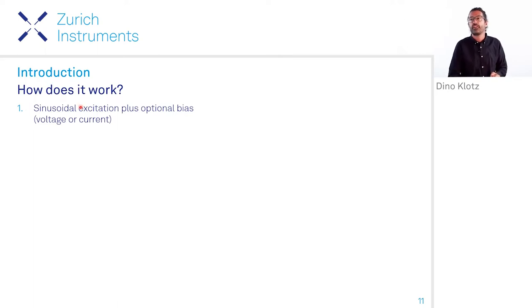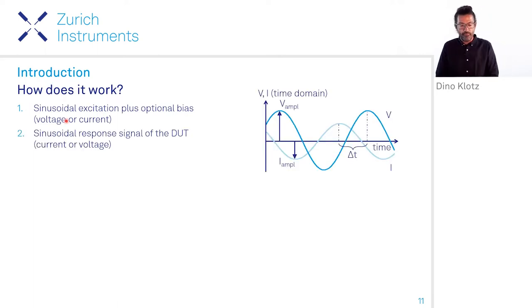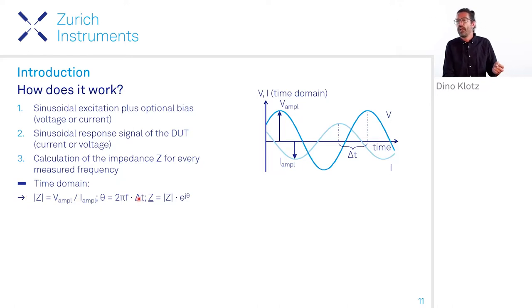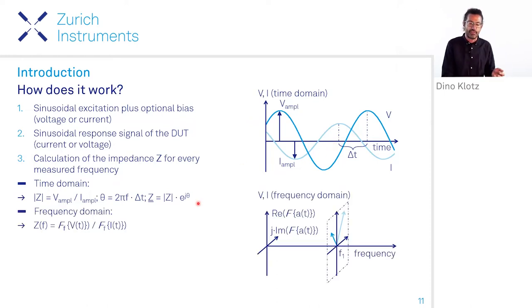But how does it actually work? Well, we start with sinusoidal excitation. There can be voltage or current. And then we measure the response signal of the DUT, the device under test, which is then either a current or a voltage signal respectively. And then we do this for each frequency of interest. And if we have then the two signals, looking at the time domain with the ratio of the two amplitudes, we can get the absolute value and we can get the phase angle from this time lag between the two systems. Or you can think of it as a frequency domain technique. You can calculate the Fourier coefficient, the complex Fourier coefficients for each signal, and then build the fraction of them. And then you will also get the complex impedance for this frequency.